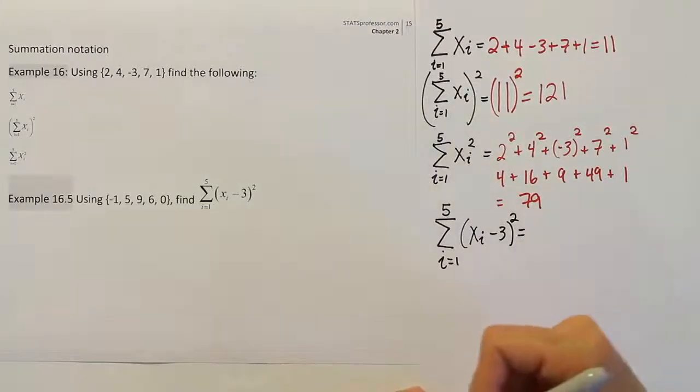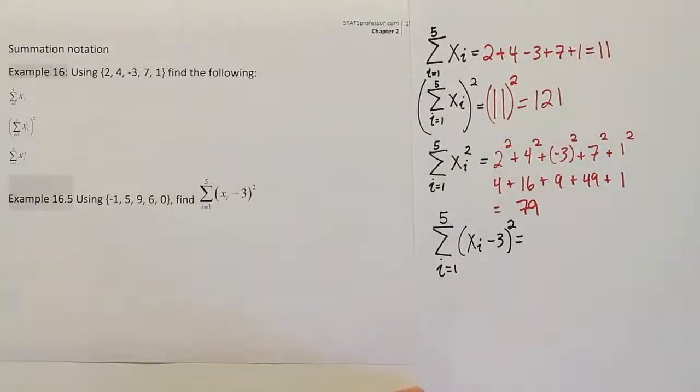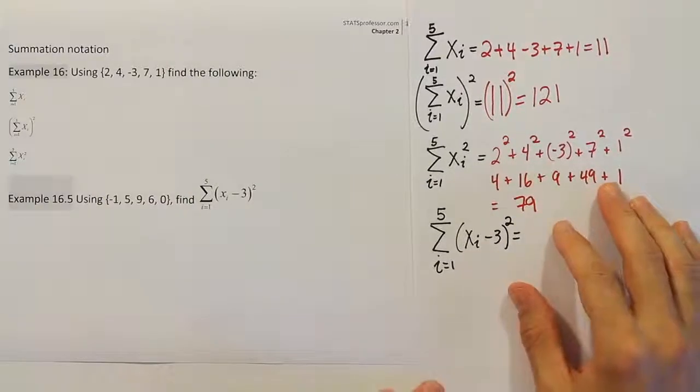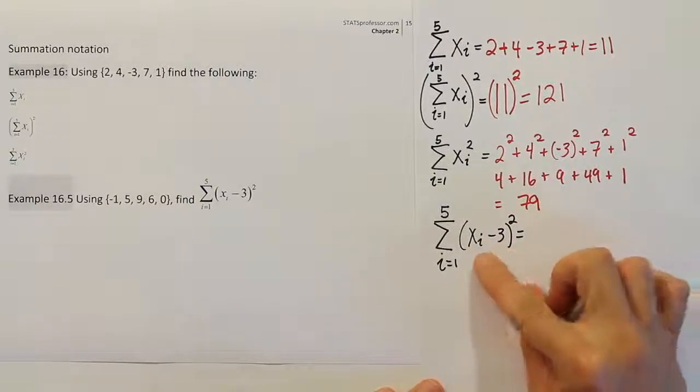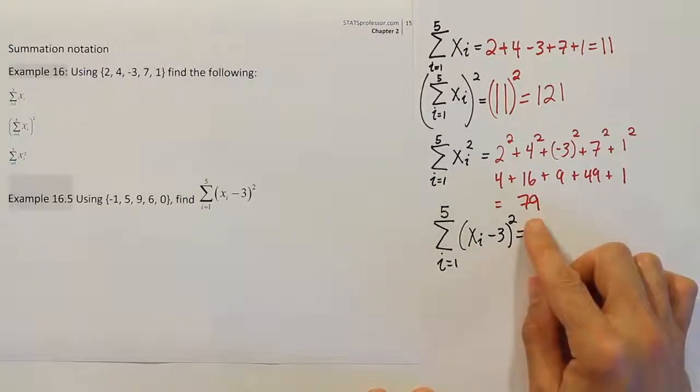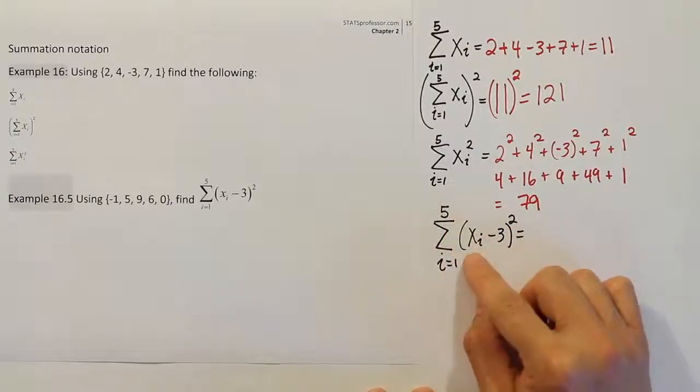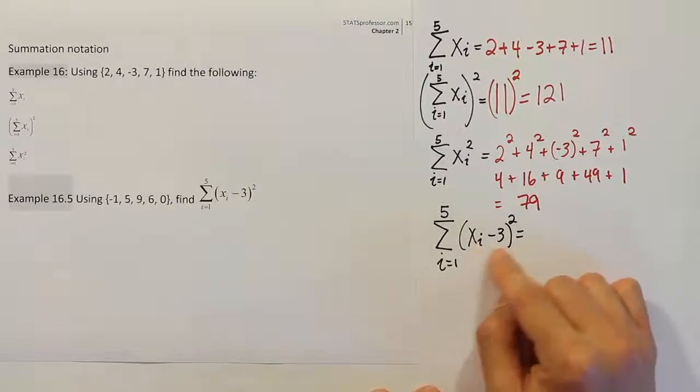It actually says the summation from 1 to 5 of parentheses x sub i minus 3 squared. This is what they're asking us to work out. Well, when I look at that, I say, okay, well, I have parentheses, and parentheses go first before exponents and before addition. So I need to apply what's inside the parentheses or do what's inside the parentheses first.